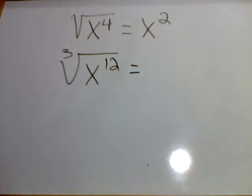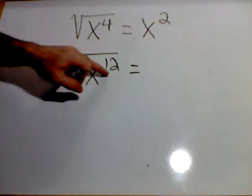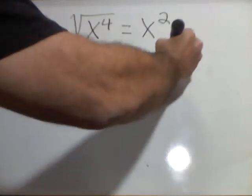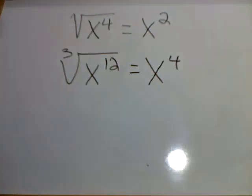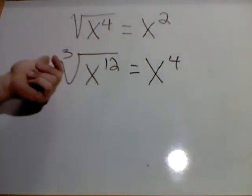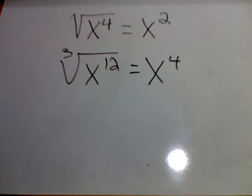Same thing with this cube. Now, I take 12 divided by 3, which gives me x to the 4. x to the 4 times itself 3 times gives me x to the 12th.